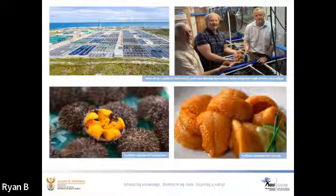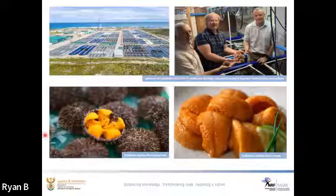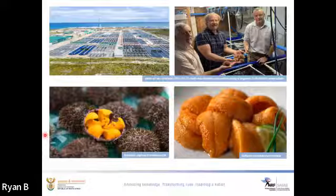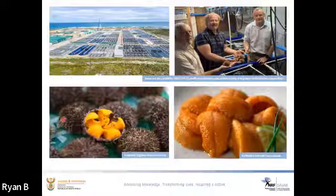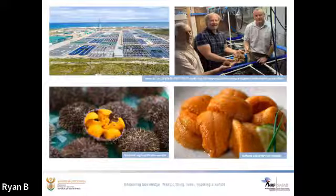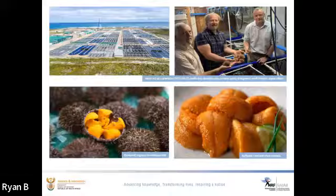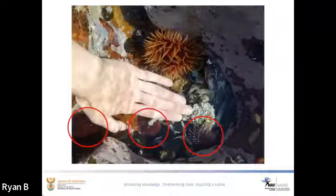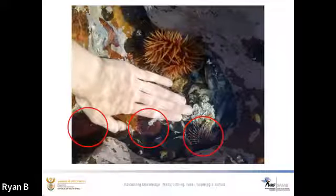South Africa would benefit from the introduction of urchin culture because urchin gonadal tissue — more appetizingly called uni — is used in the sushi industry, for which overseas markets will pay top dollar, making this a valuable potential candidate for export. I chose the Cape Sea Urchin Parechinus angulosus due to its broad distribution and the wide range of environmental conditions the species is exposed to along the South African coastline. Though P. angulosus is not an edible species, this investigative protocol can be applied to any species globally.